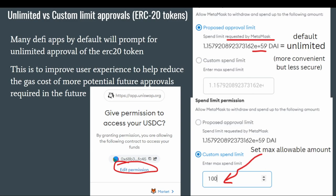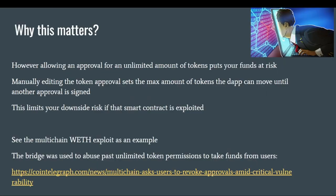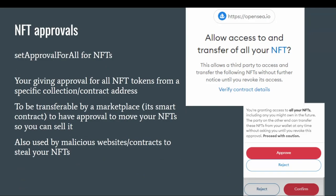Manually adding the token approval sets the max amount the dApp can move, and it's basically just a way to limit your downside risk. A real example is the Multichain bridge exploit, where WETH — which is just ETH in an ERC-20 token form — was drained from users' wallets. Because people had pre-approved unlimited WETH for the bridge, when the exploit happened, their WETH was drained from their wallet entirely because of those unlimited token permissions they had granted.